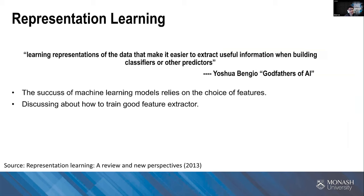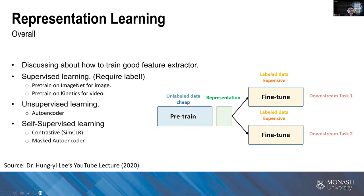At the first ICLR conference, the godfather of deep learning said: 'learning representations of the data that make it easier to extract useful information when building classifiers or other predictors.' The success of machine learning models relies on the choice of features — that is what representation learning is about. To build a good feature extractor we can use supervised learning, like models pre-trained on ImageNet for images or the Kinetics dataset for video.